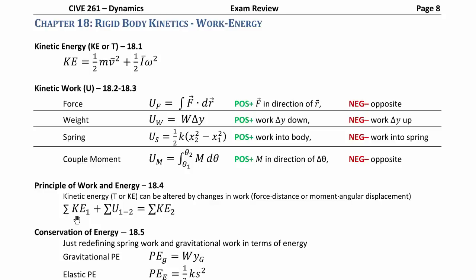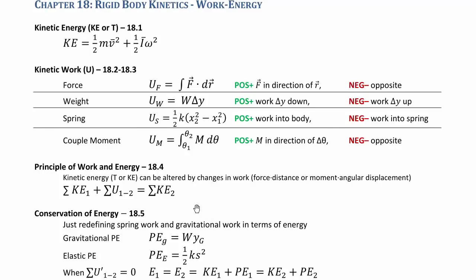These work terms combine into the overall work-energy equation: initial kinetic energy plus work done on the system between initial and final states equals final kinetic energy. The summations account for multiple bodies by adding all kinetic energies together — this only works for systems with constrained, one-degree-of-freedom motion. For conservation of energy, you can reframe things in terms of gravitational and elastic potential energy so that initial kinetic plus initial potential equals final kinetic plus final potential, but you cannot have any external force terms in that conservation framework.